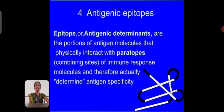The antigen epitopes. Epitopes are antigenic determinants, portions of the antigenic molecule that physically interact with the paratopes. The immune response molecules therefore actually determine the antigen specificity.